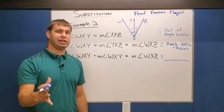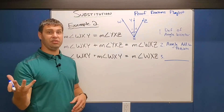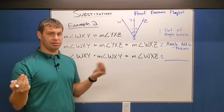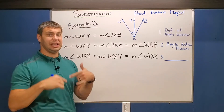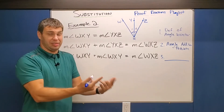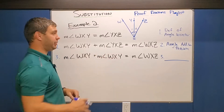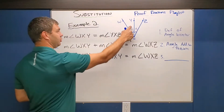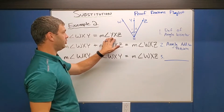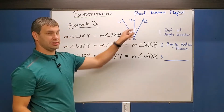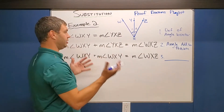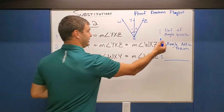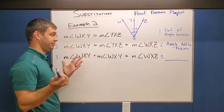Another really common idea with substitution is taking an angle or segment and replacing it with another angle or segment that has the same value. In this example, we have the measure of angle WXY — angle one — equals the measure of angle YXZ — angle two — because of the definition of an angle bisector.